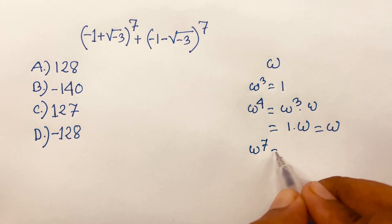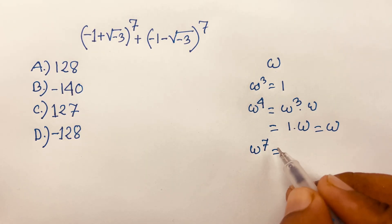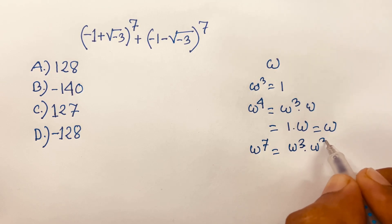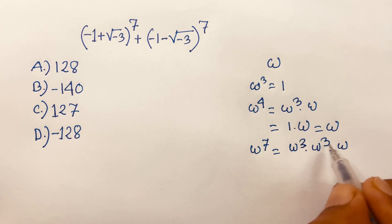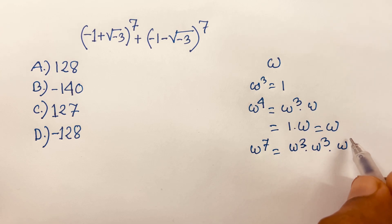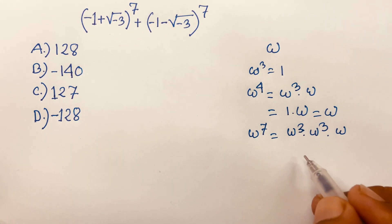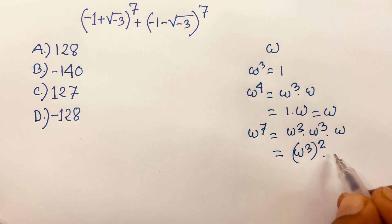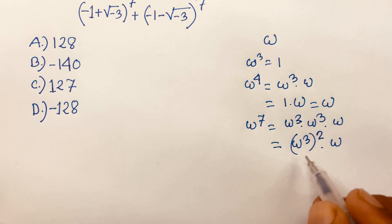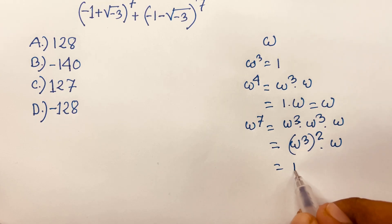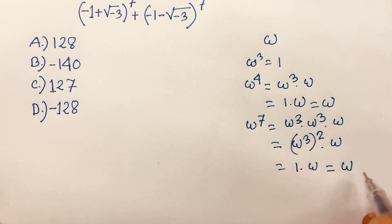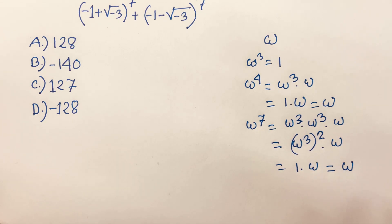If omega power 7 is equal to what? Omega power 7 will be (ω³)² times omega. Because 3 + 3 = 6, and 6 + 1 = 7. So omega power 3 bracket squared times omega equals 1 squared times omega, which equals omega. So omega power 7 equals omega.